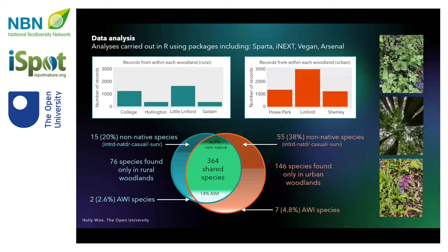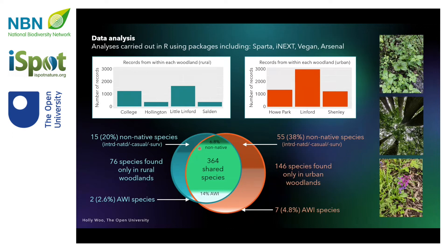I'm analysing the data to examine differences in the composition of plant communities of the urban and rural woodlands. Initial results indicate that of the 586 species recorded within the target woodlands, 146 species were found only in the urban woodlands, and 38 percent of these were non-native species — which is nearly twice the proportion of non-native species found in the rural woodlands, and over four times as many as the proportion of non-natives in both urban and rural woodlands.